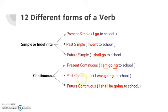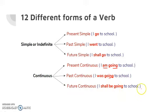In past continuous, the same ing form of the verb is used along with the be verb, but in its past form. What is the past form of be verb? 'Was'. So: 'I was going to school.' And in future continuous: 'I shall be going to school.' The verb form is same — ing form — and to show it will be happening in the future time, I am using 'shall be'.